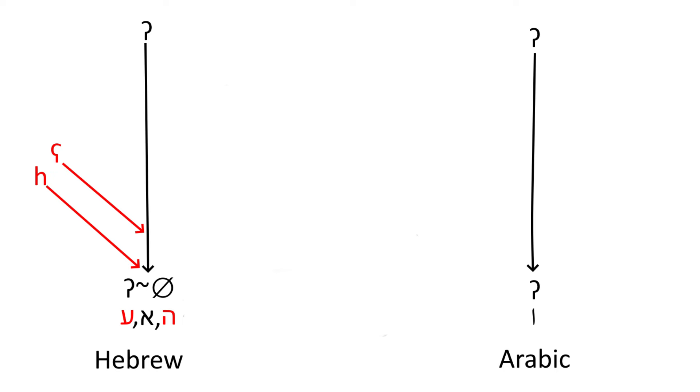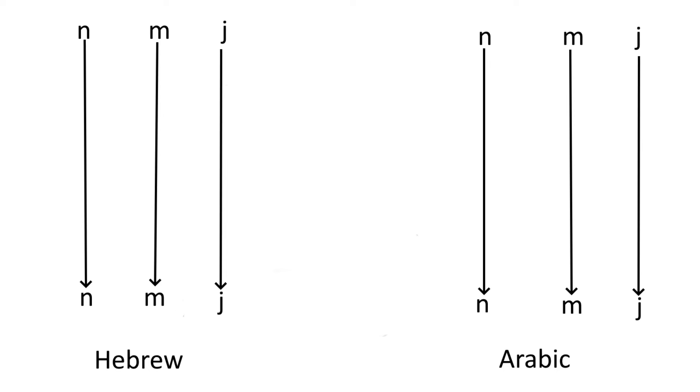Finally, under the sonorants, N, M, and Y practically went unchanged in both Hebrew and Arabic, though N can become velar Ng before K and G in modern Hebrew.